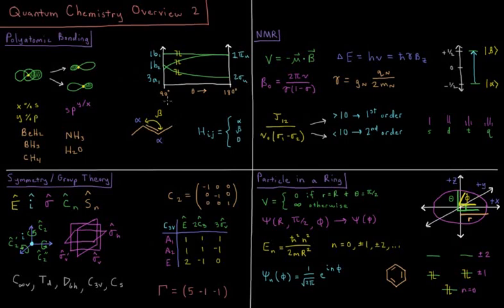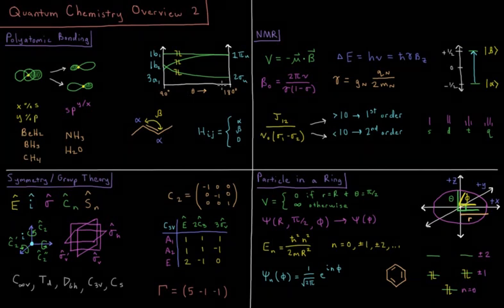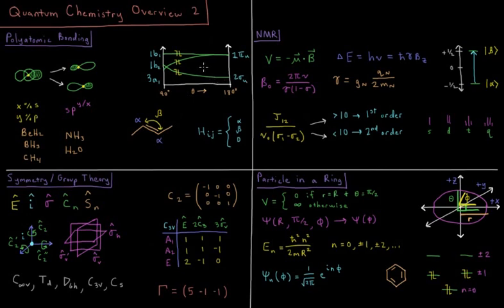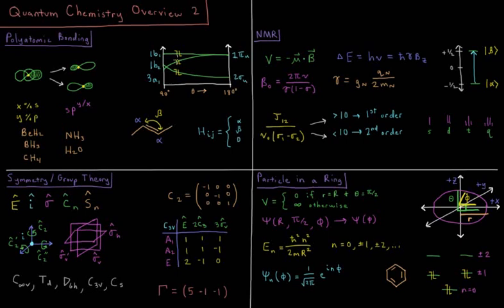We look at things like Walsh diagrams, which show the energies of orbitals versus the bond angle of the molecule, showing us how we can figure out what angle these molecules prefer to be at by showing what angle minimizes the energy of all of their electrons in each of their orbitals.